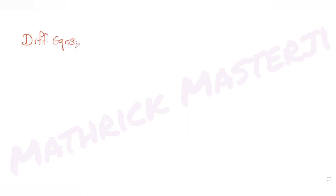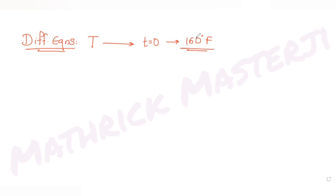Hi guys, I hope you are all doing well. Let's see today's question, which we are taking from the topic of differential equations. The question tells us that the temperature T of a body at time t equals 0 is 160 degrees Fahrenheit, and it decreases continuously as per the differential equation dT/dt equals minus k times (T minus 80), where k is a positive constant.